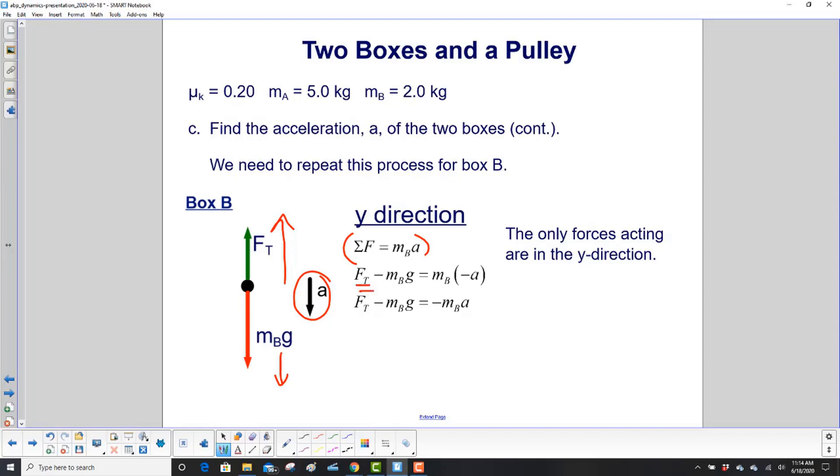Gravitational force, negative, down direction. And acceleration is down, so we stick the negative A in there. And then we come up with tension minus M sub B G equals minus M sub B A.